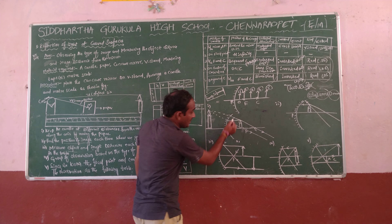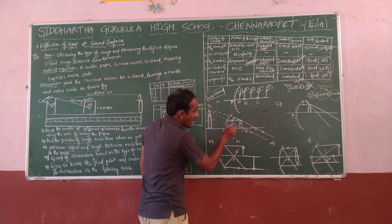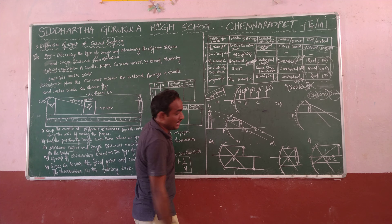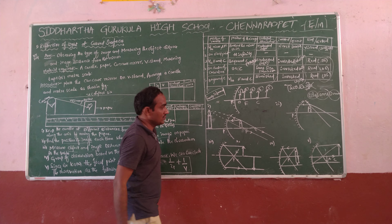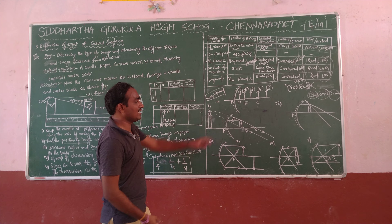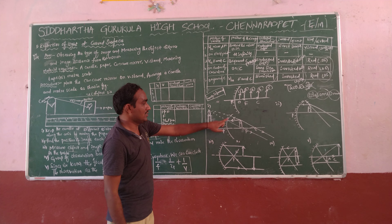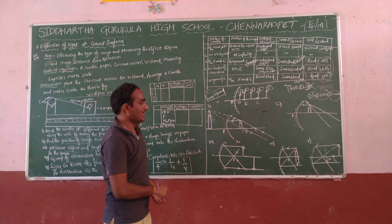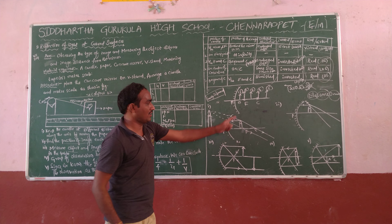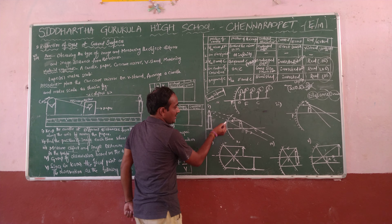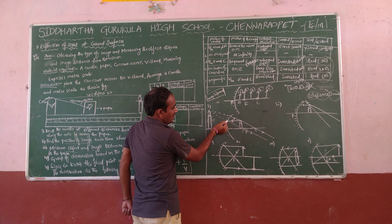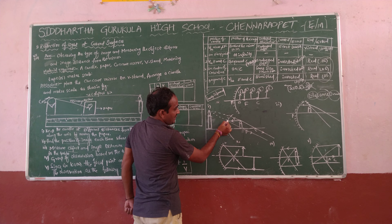So first one, first direction: the object is between the mirror and pole and focus. Here, pole and focus — the object hierarchy is in between pole and focus.